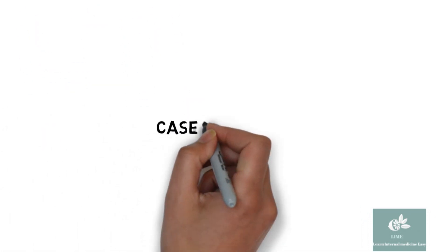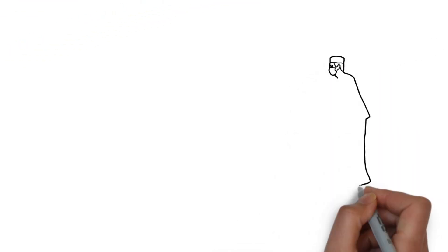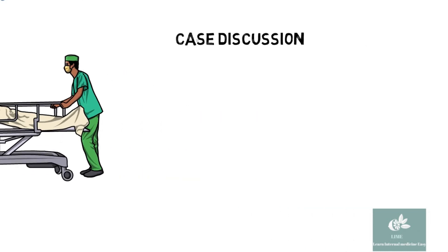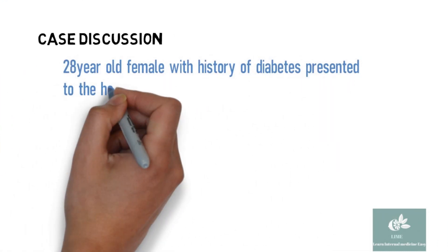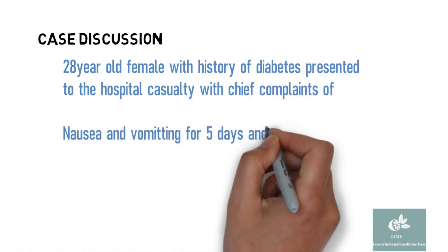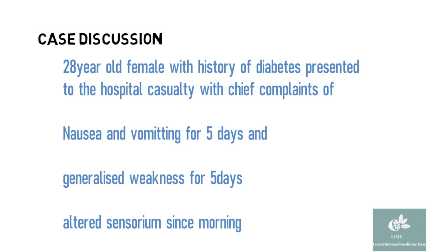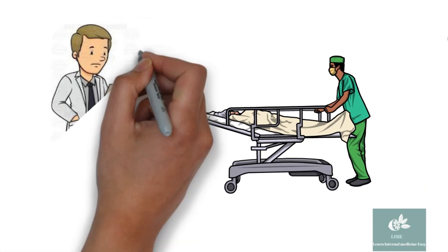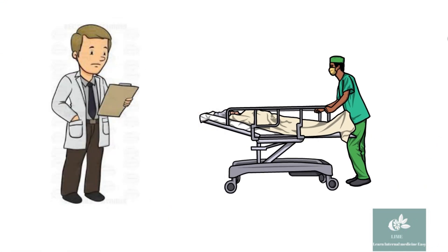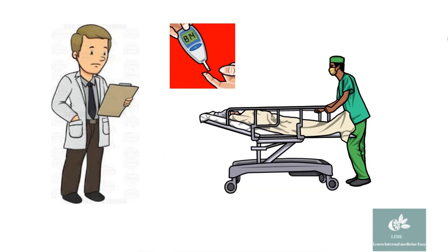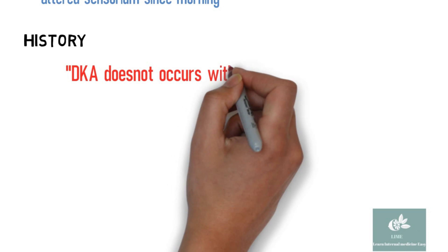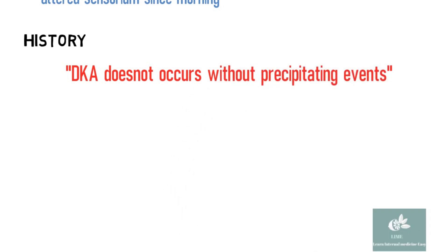Let's learn to manage a case of DKA with a case discussion. A 28-year-old female with a history of diabetes presented to the hospital casualty with chief complaints of nausea and vomiting for 5 days, generalized weakness for 5 days, and altered sensorium since morning. Nausea and vomiting in a diabetic patient warrants evaluation for DKA. With altered sensorium, first check CBG — in our patient it is high. With high suspicion of DKA, take a brief history focused on finding the precipitating factor.